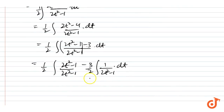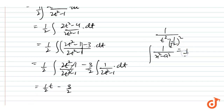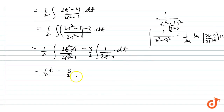This simplifies to one half times t minus three halves times the integration of 1 over (2t squared minus 1) dt. We can write 2t squared minus 1 as a difference-of-squares form: t squared minus 1 over root 2 squared. The standard formula for integration of 1 over (x squared minus a squared) is 1 over 2a times log of (x minus a) over (x plus a) plus c.